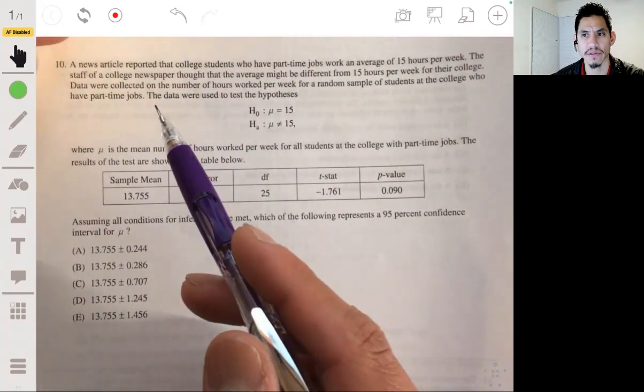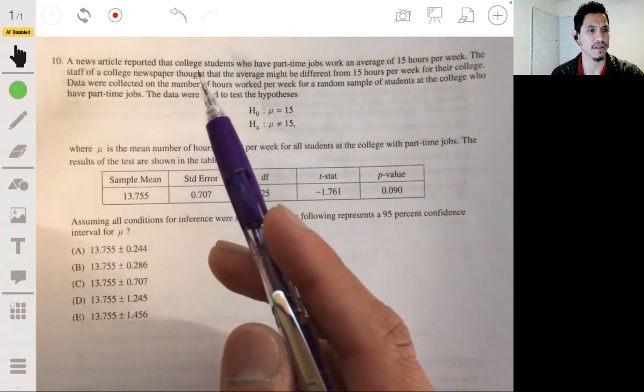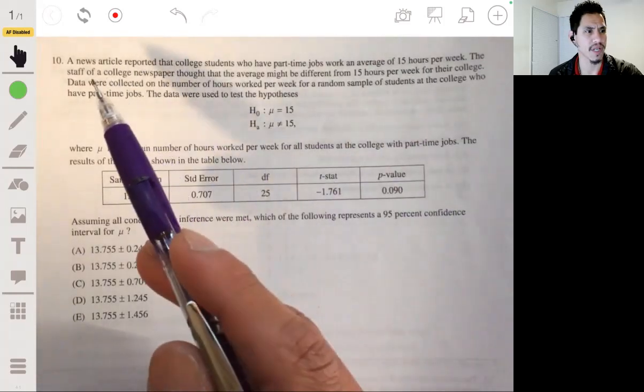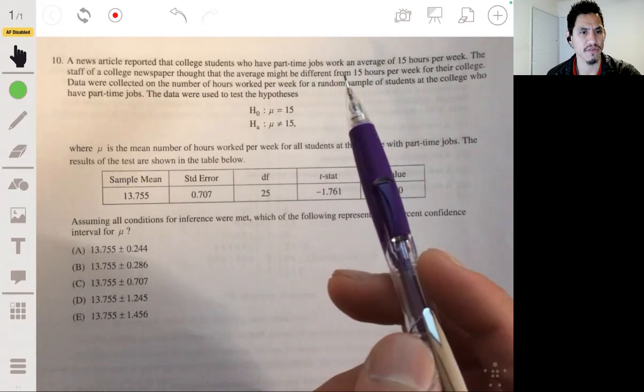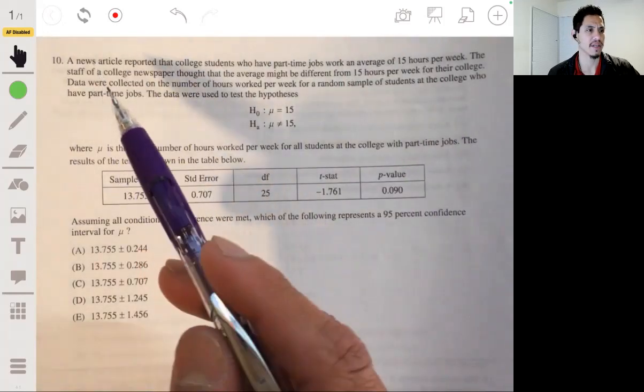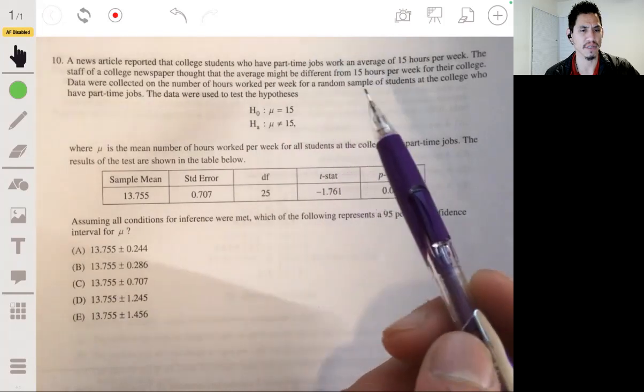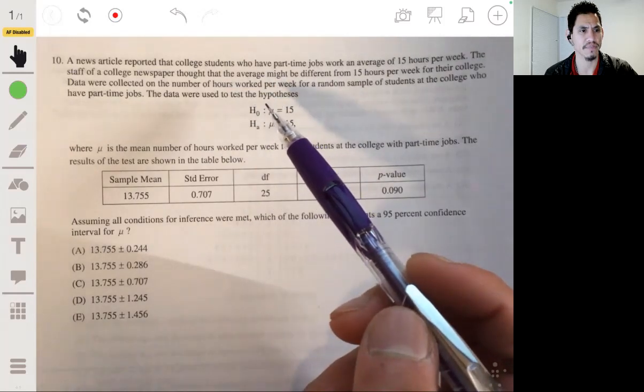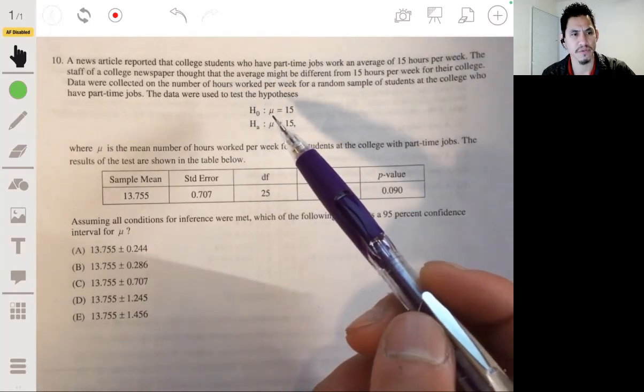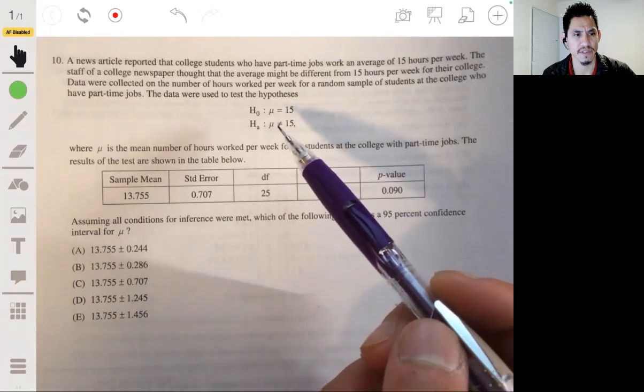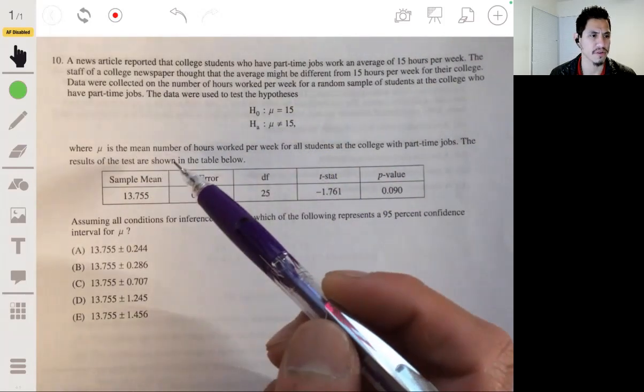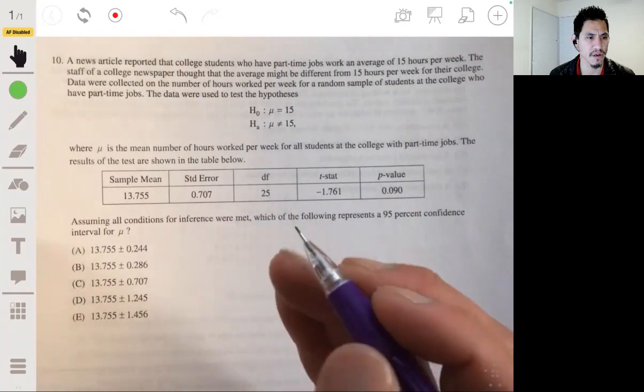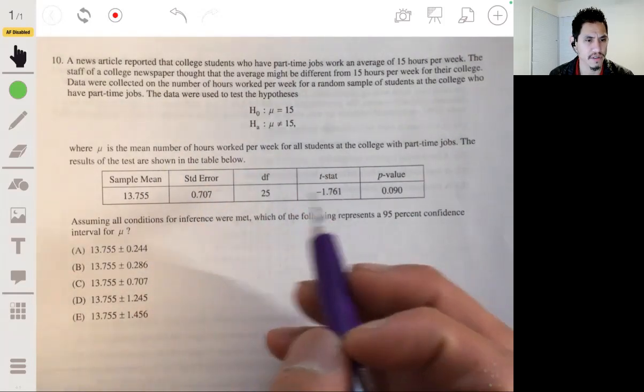Right. Problem 10. A news article reported that college students who have part-time jobs work an average of 15 hours per week. The staff of the college newspaper thought that the average might be different from 15 hours per week for their college. Data were collected on the number of hours worked per week for a random sample of students at the college who have part-time jobs. The data were used to test the hypotheses. The true mean mu is 15 versus the alternative is that it's not 15. The results of the tests are shown in the table below.